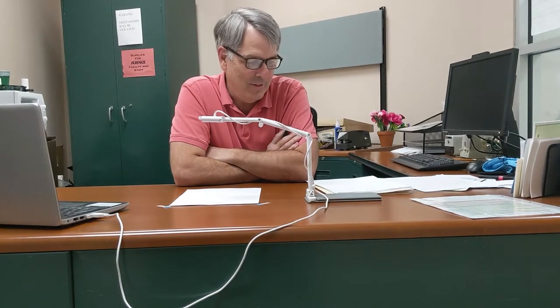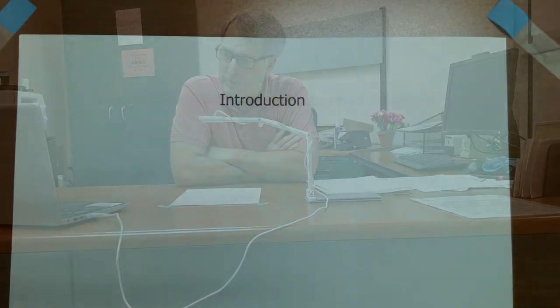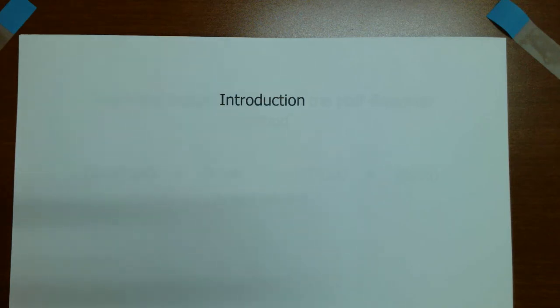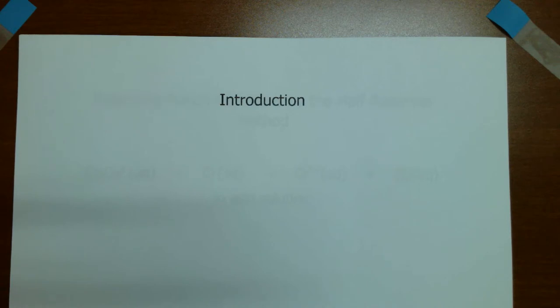Good morning, Chem 122 students. Today I'm going to demonstrate experiment number 23, which is the determination of iron by redox titration. In this experiment, we're going to do two different titrations. First, we're going to take a standard amount of sodium oxalate and titrate it with potassium permanganate to find the concentration of permanganate. Then we're going to use that concentration to find the amount of iron in an unknown sample. Each titration will be done in duplicate, for a total of four titrations.